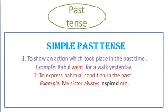Chaliye now let us come to the next tense and that is past — matlab jo beet gaya. Simple past tense: it shows the action which took place in the past. Matlab jo pehle ho chuka hai, uske baare mein batata hai. Jaisa ki: 'Rahul went for a walk yesterday' — Rahul kal ghoomne gaya tha.